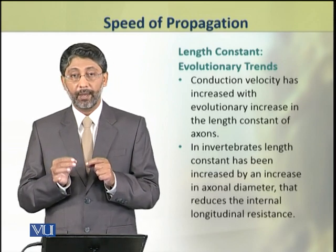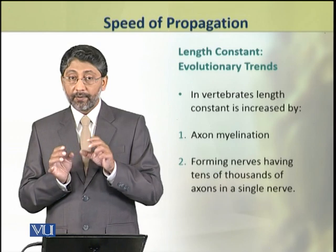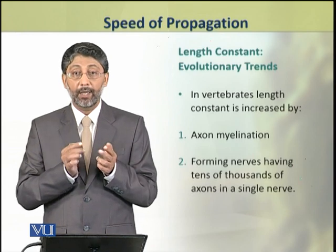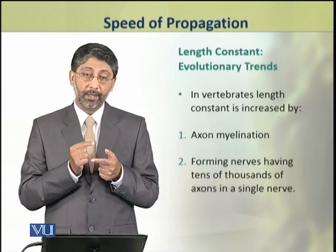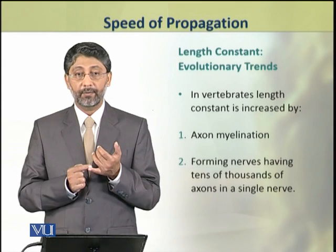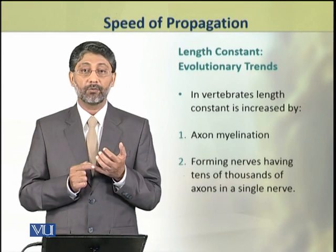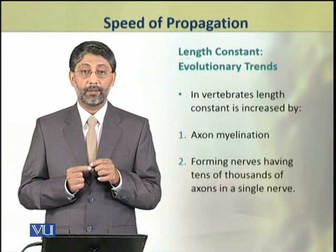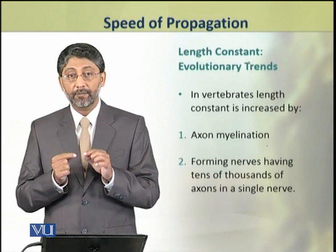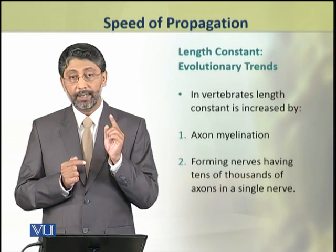As a result, the conduction speed of action potentials increased. When vertebrates evolved from invertebrates, instead of simply increasing axon diameter, two other mechanisms emerged through which the length constant was increased. The first factor in vertebrates contributing to increased propagation speed is axon myelination, and the second factor was the formation of nerves, which have tens of thousands of nerve fibers in a single nerve.